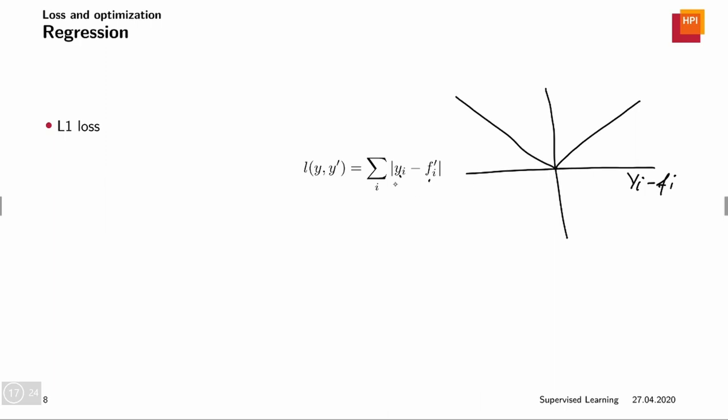So this is basically the point yi equals fi. And here they go, they start to differ. So if fi is too high, we get a positive loss. And if fi is too low, because we're taking the absolute value, we also get a positive loss.